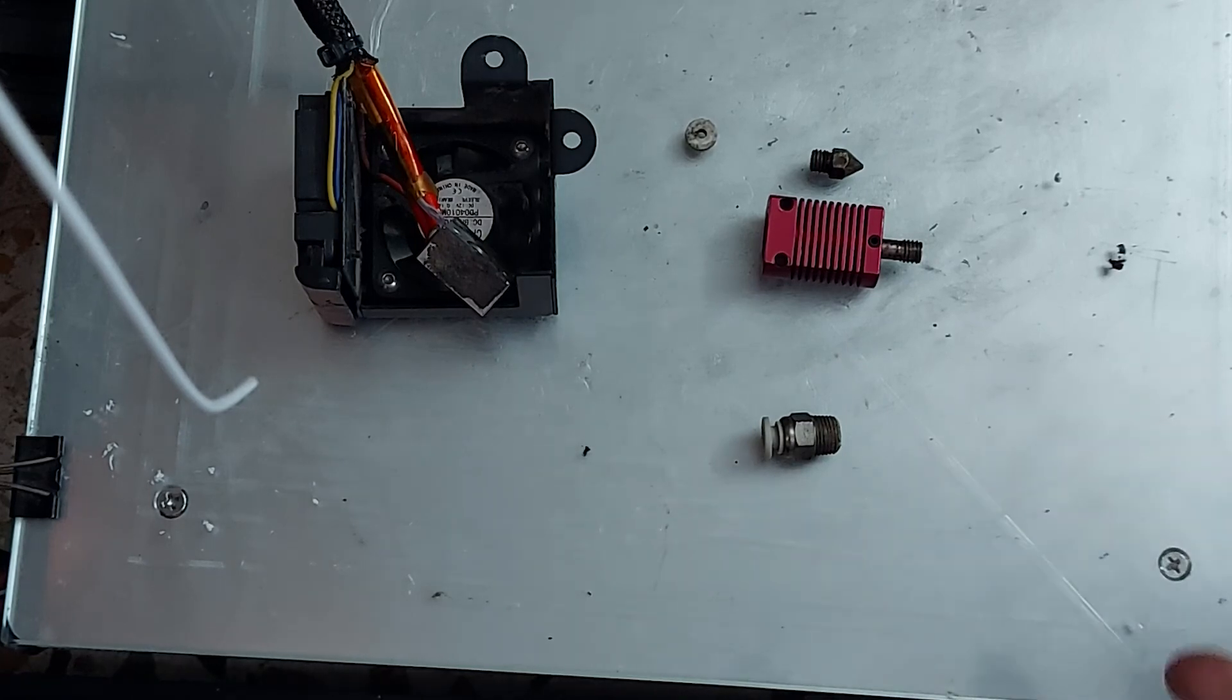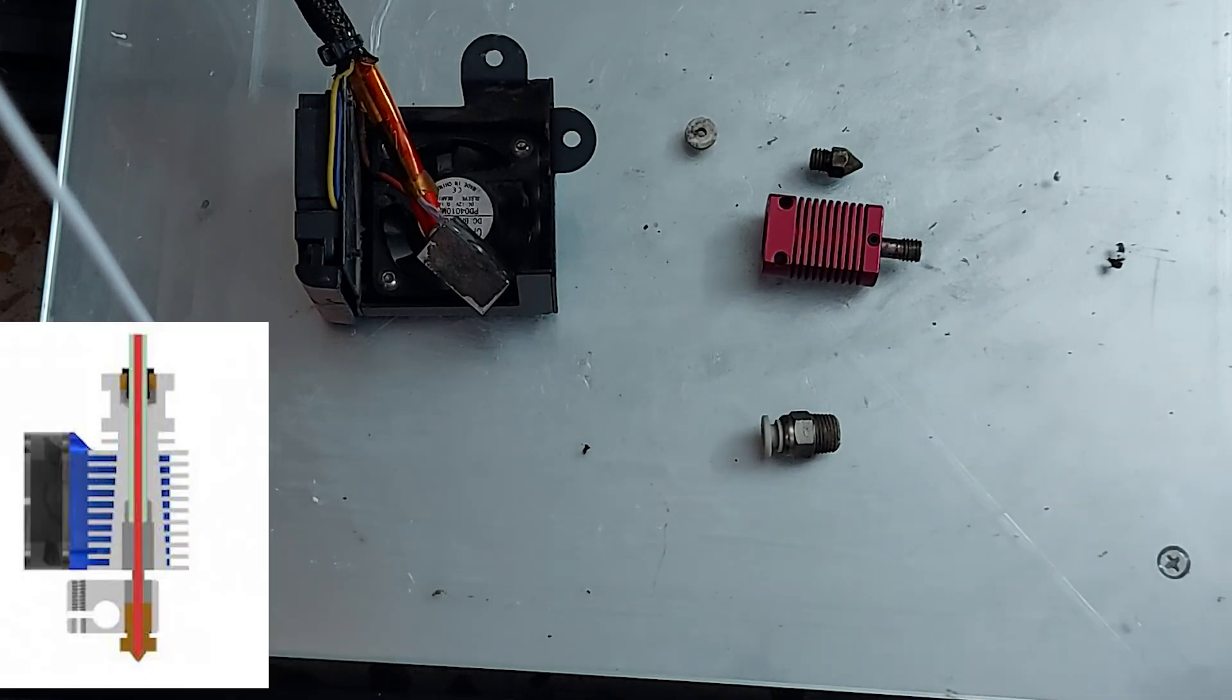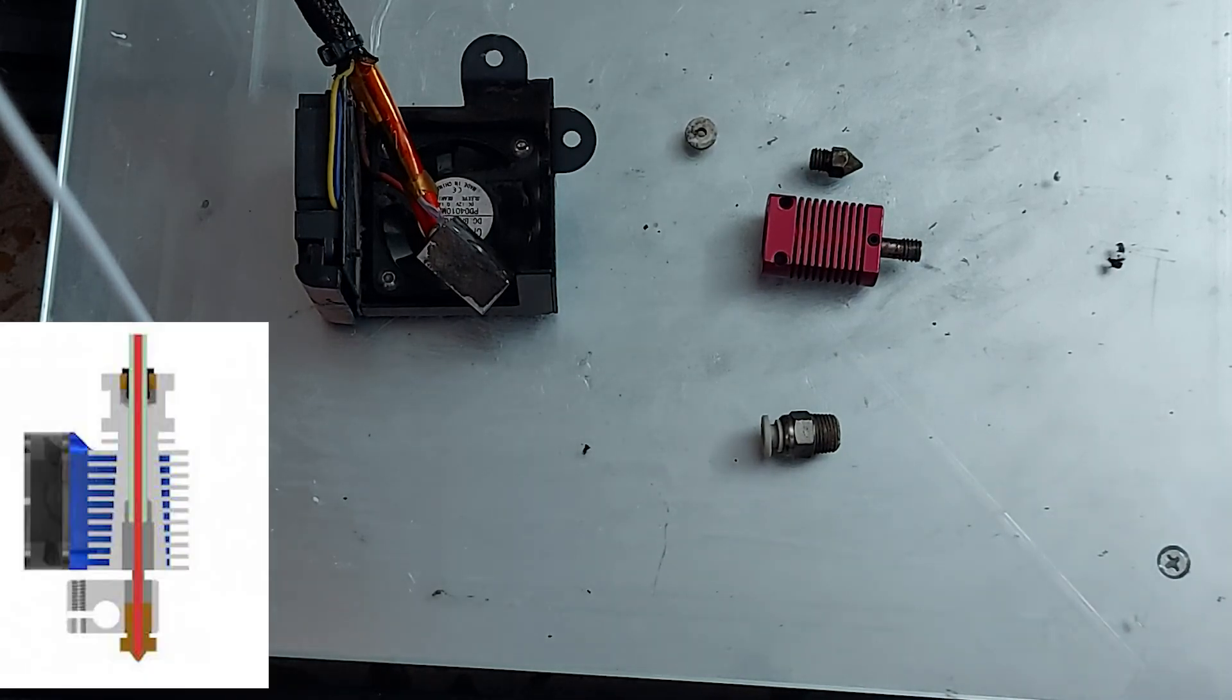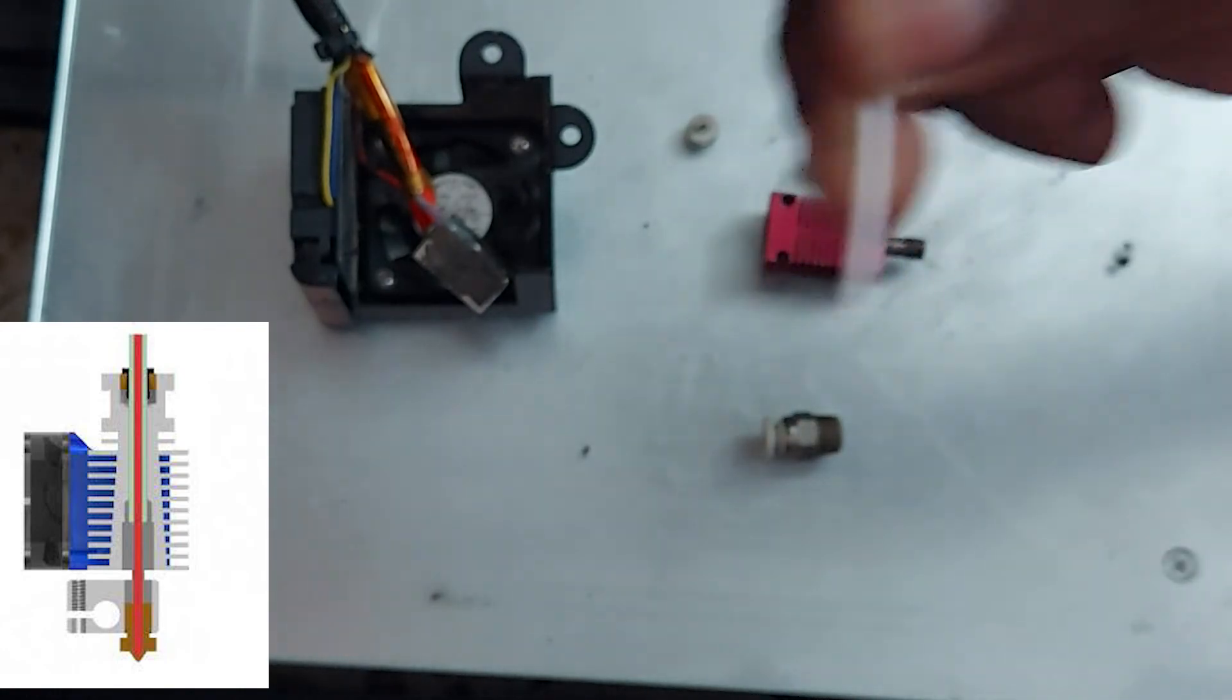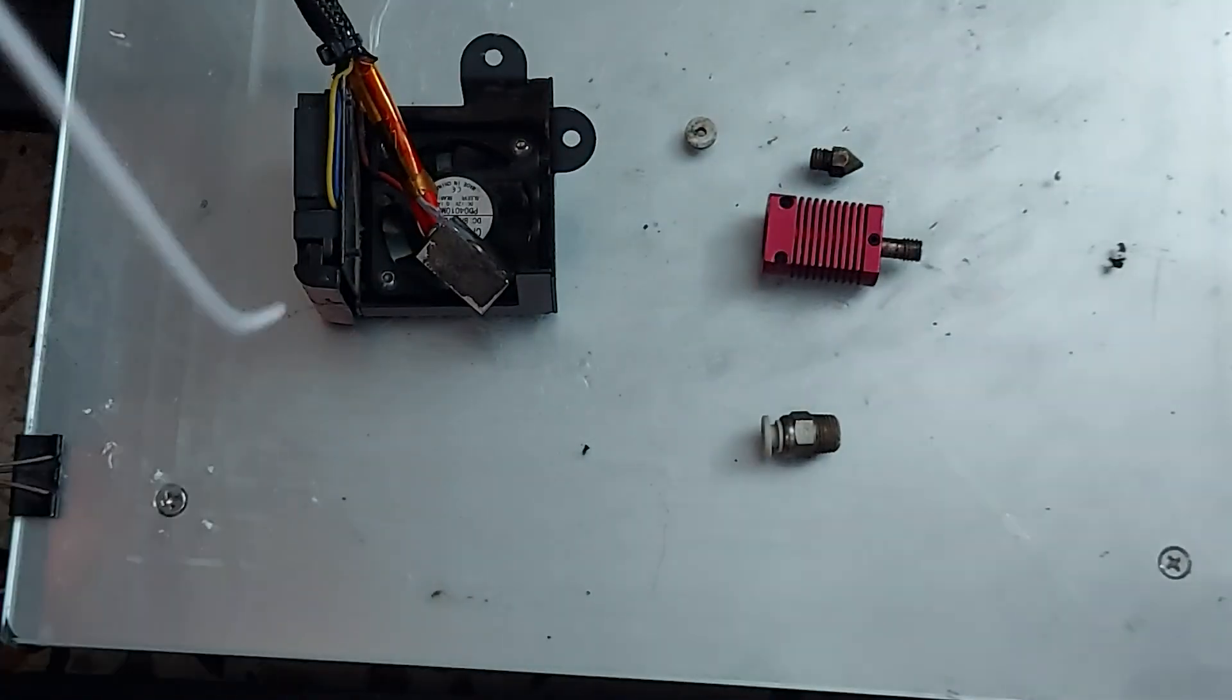I'm going to explain what are different parts of a hotend. A hotend is one of the main components of a 3D printer which helps to melt and extrude the filament at a consistent temperature for a successful print.